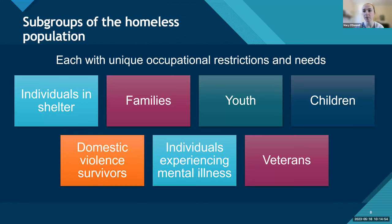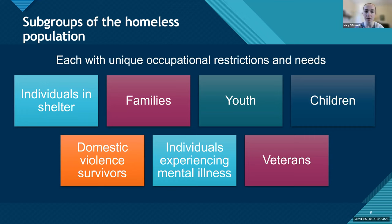Homelessness is a broad category that touches many different groups, and each group has unique occupational restrictions and needs. These groups include folks living in shelters, families experiencing homelessness, youth — adolescents and children — domestic violence survivors, individuals experiencing mental illness or mental health challenges, and veterans. Defining the homeless population broadly doesn't really help us understand the needs of each group. I'll talk later about programs and interventions that target particular groups, because each group has really unique needs requiring unique evaluation and intervention approaches.